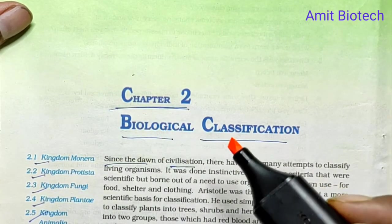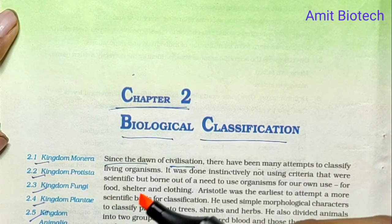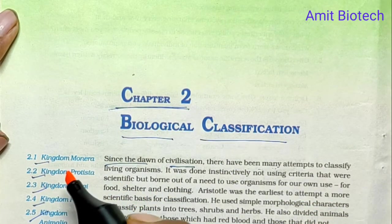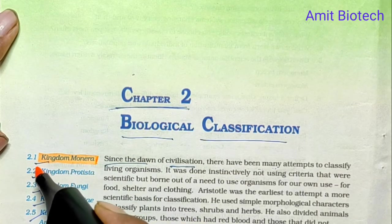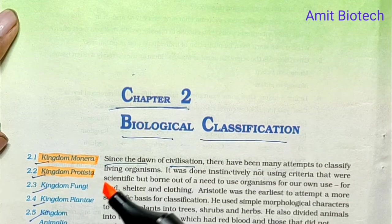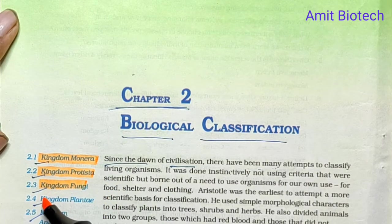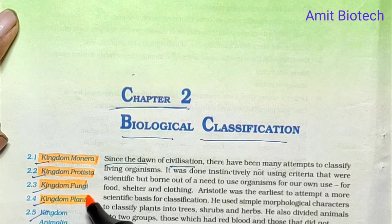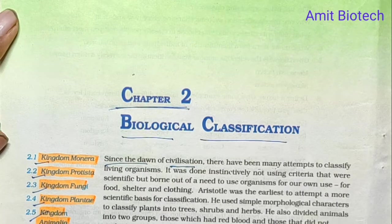Chapter two: Biological Classification. There are a total of six points for a new power. The five kingdoms are: Kingdom Monera, Kingdom Protista, Kingdom Fungi, Kingdom Plantae, and Kingdom Animalia. There is also a discussion of why viruses are not placed in any of these kingdoms.